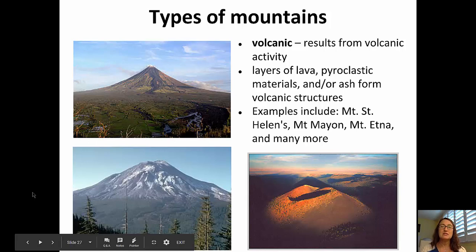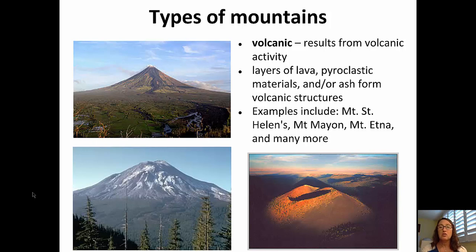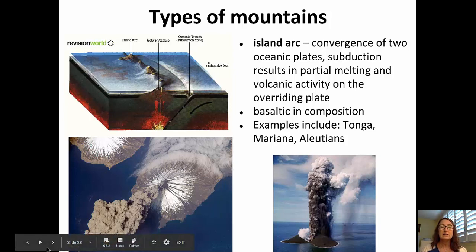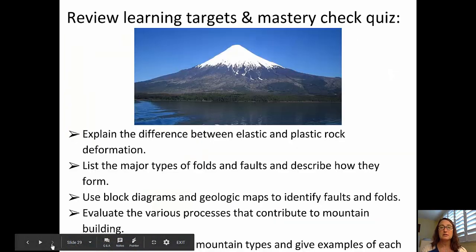We also have volcanic mountains that result from volcanic activity, where layers of lava, pyroclastic materials, or ash form volcanic structures such as Mount St. Helens, Mount Maione, Mount Etna, and many other volcanoes around the world. Island arc volcanoes form at the convergence of two oceanic plates — when one plate is subducted beneath the other, the overriding plate experiences volcanic activity, often forming an island arc. Examples include Tonga, the Marianas, and the Aleutian Islands.